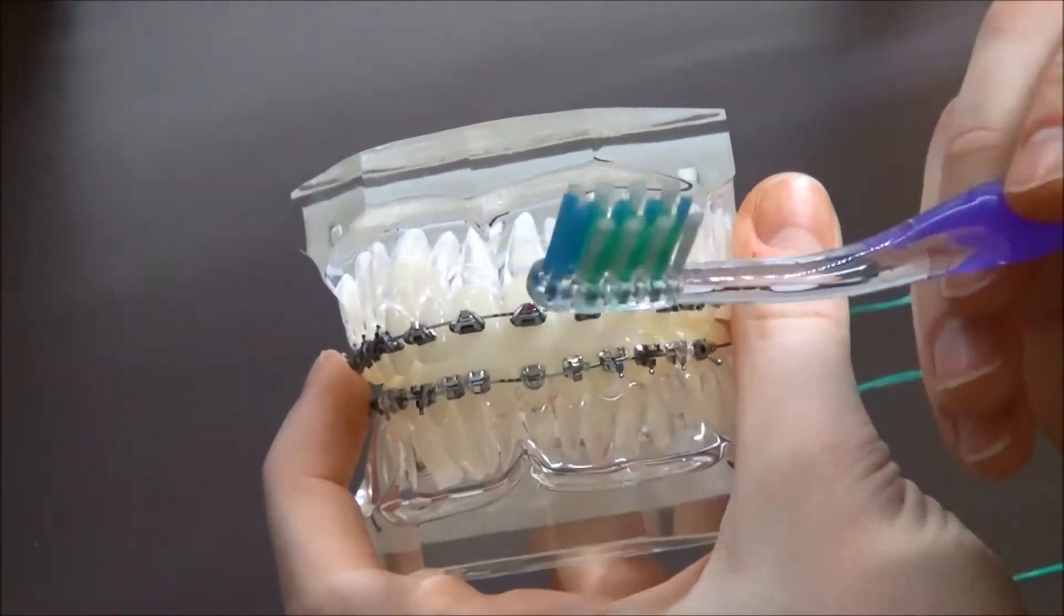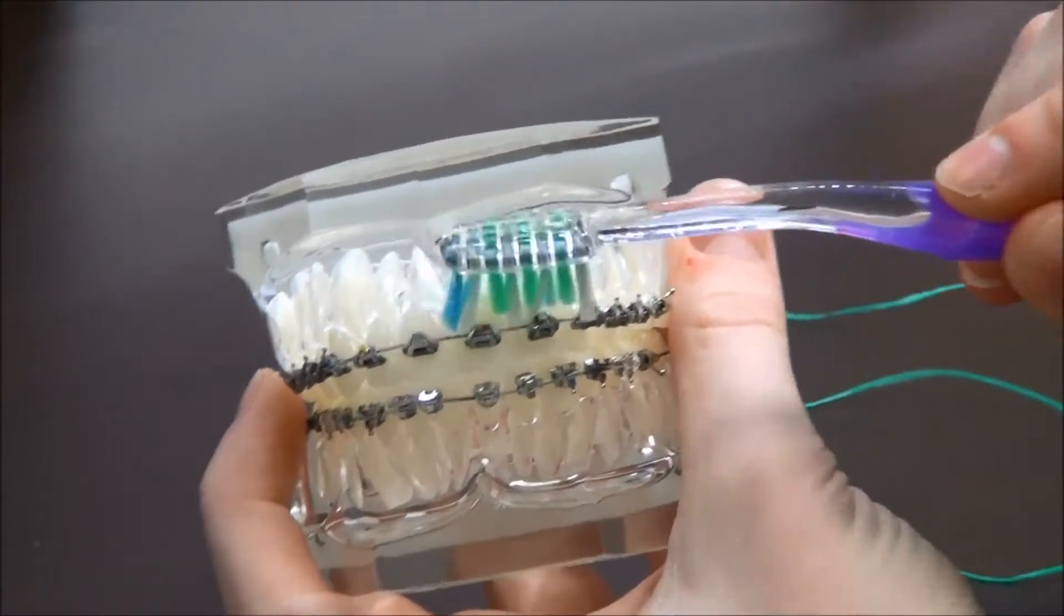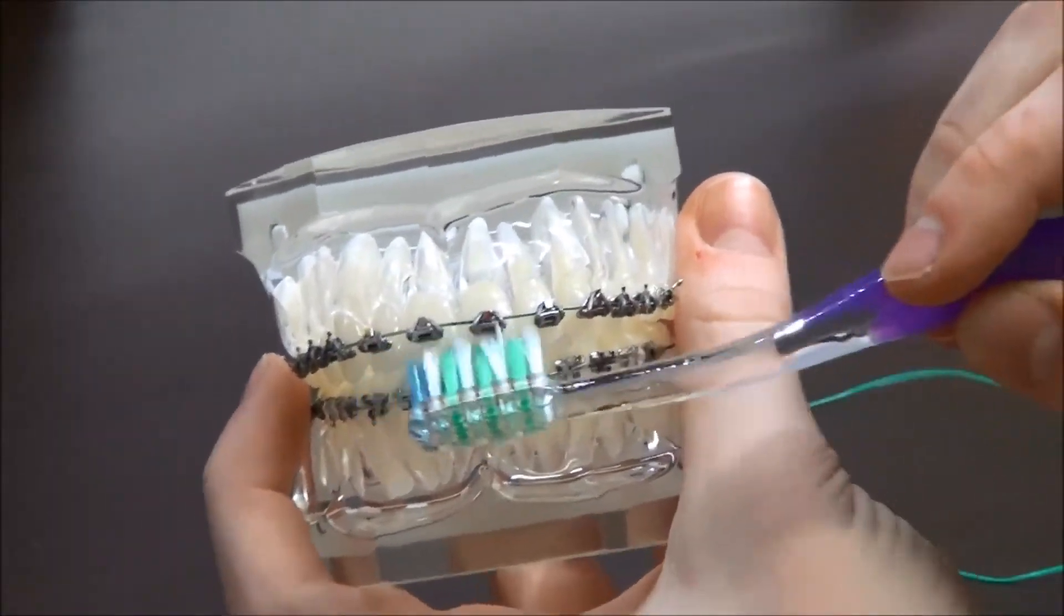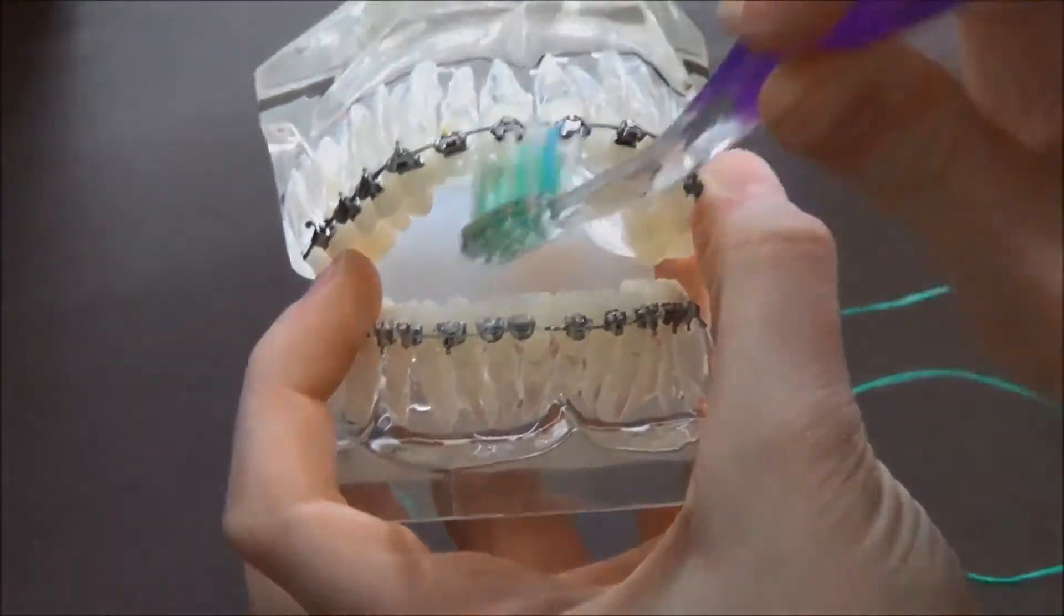Lastly, you're going to be using your toothbrush. With the bristles, you're going to have to point them on top of the brackets like this, underneath and on the inside of your mouth where the braces are.